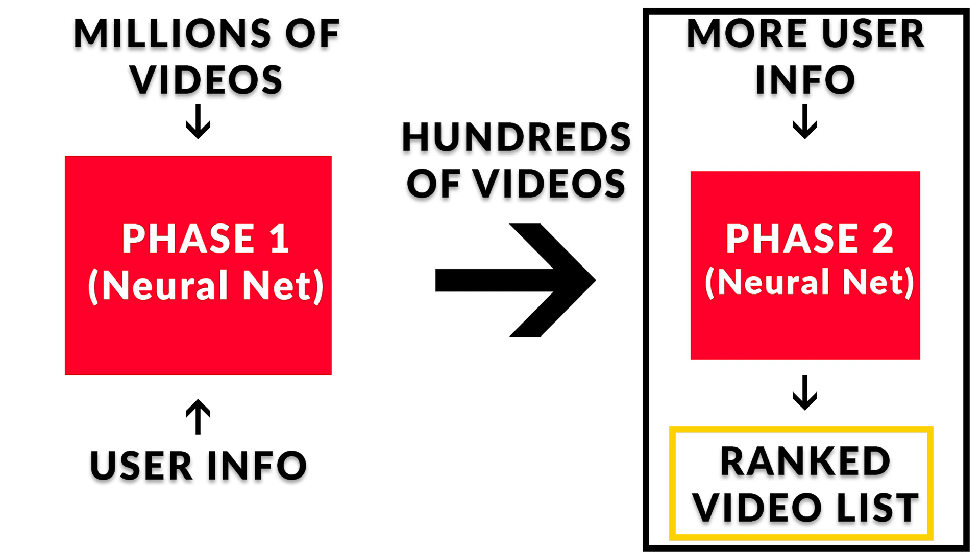Next, they have a ranking neural net. This takes the group of videos they've narrowed it down to and orders them based on what they believe will maximize your expected watch time. The video they show you first is the one they expect you will click on and watch for the longest period of time — again, that expected watch time metric. In this layer, they can use far more data for each video because they're working with a smaller data set of less than 1,000 videos. This tiered system allows them to get very good results while still making recommendations in almost real time.